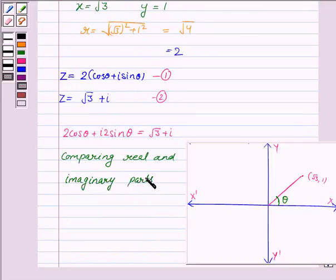We get 2 cos theta is equal to root 3, and 2 sin theta is equal to 1. So this implies cos theta is equal to root 3 by 2, and sin theta is equal to 1 by 2.